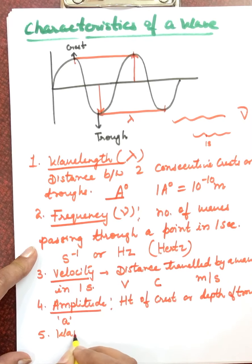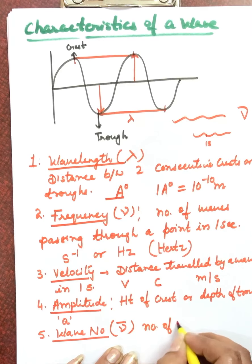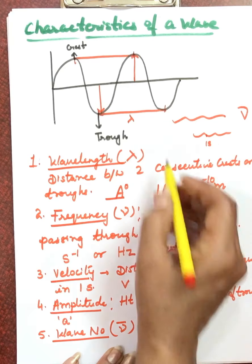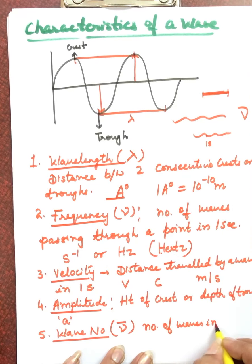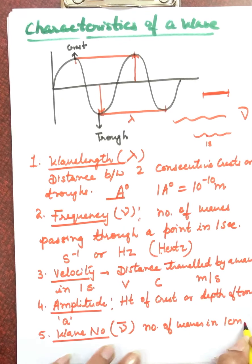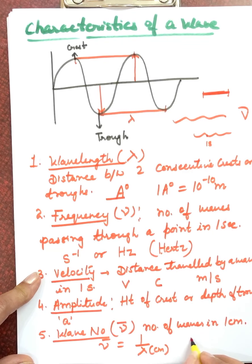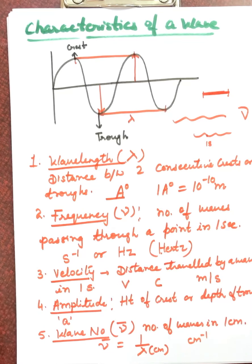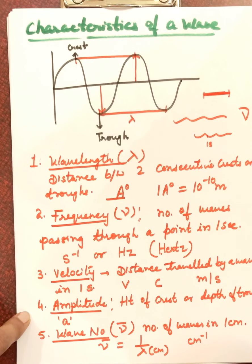The last characteristic is wave number, denoted by the symbol nu-bar (ν̄). It is the number of waves in one centimeter. Wave number equals one divided by lambda (1/λ). So if the unit of lambda is centimeters, the unit of wave number is per centimeter. These are the five characteristics of a wave: wavelength, frequency, velocity, amplitude, and wave number.